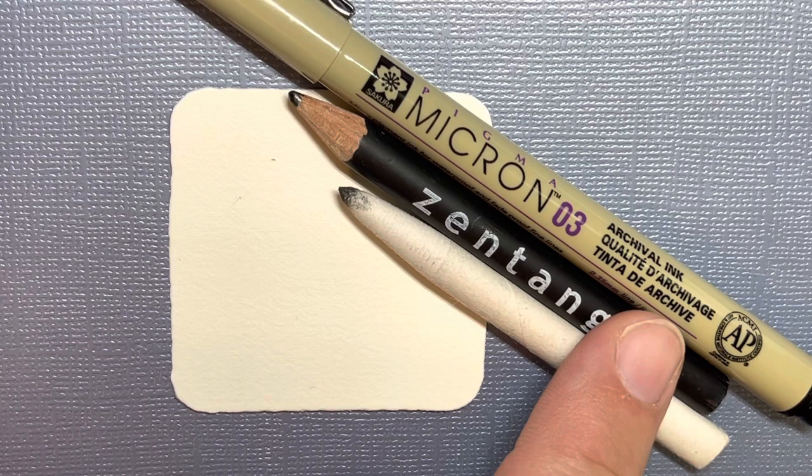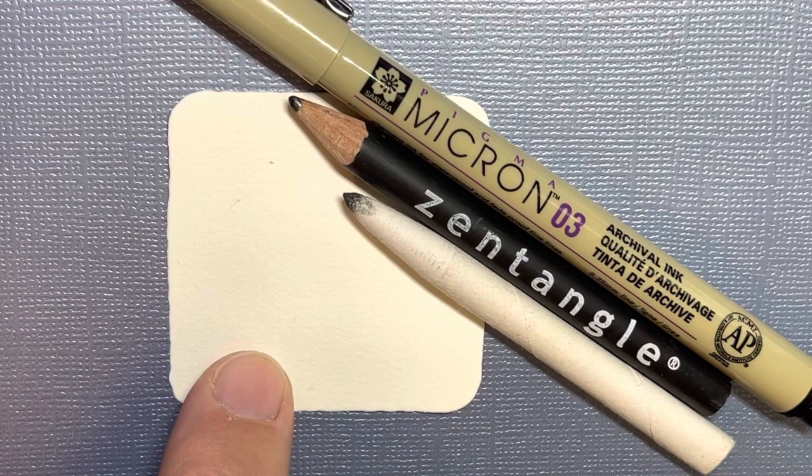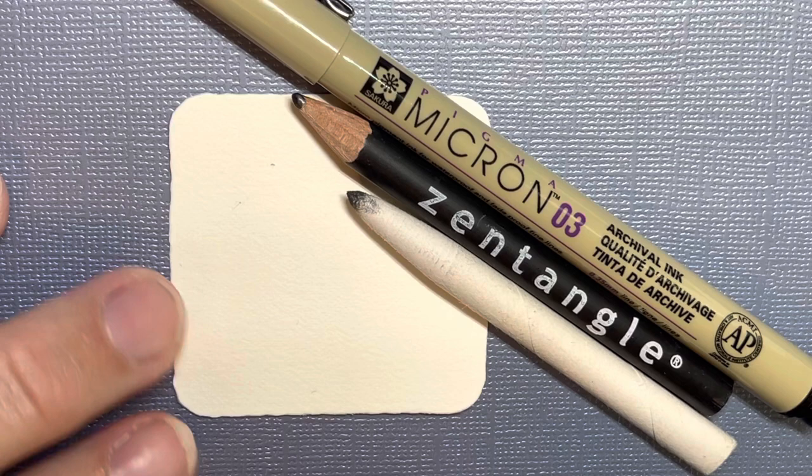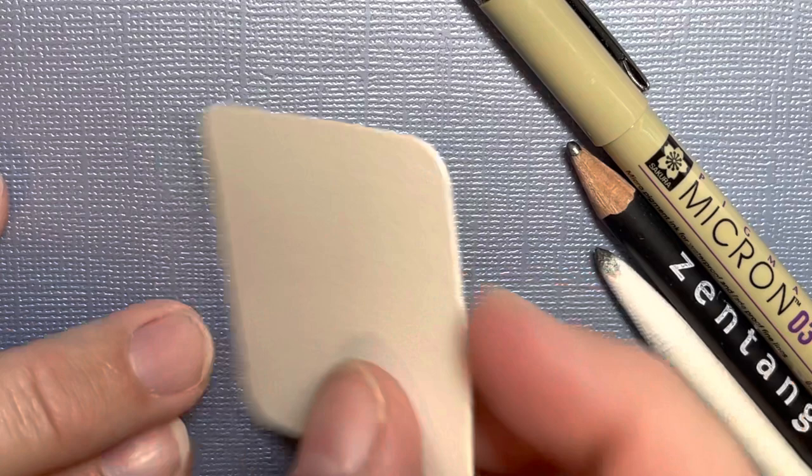I'm using a Micron 03 pencil, a Zentangle brand graphite pencil for shading, and a tortillon for blending. I'm also using a 2 inch by 2 inch small Zentangle tile. Feel free to use whatever you have on hand.